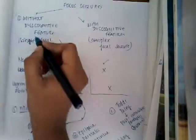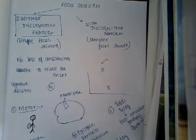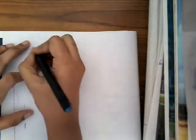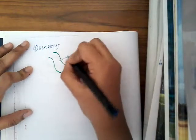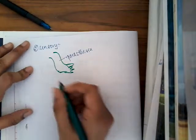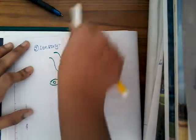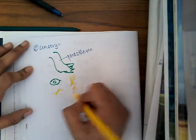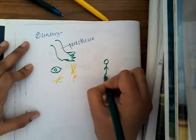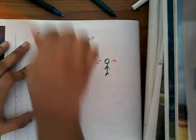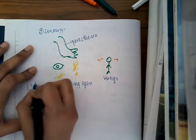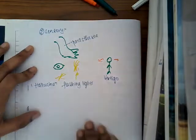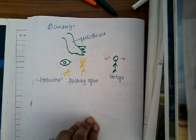This is the first type of focal seizure without discognitive features. The second type is the Sensory Type. In sensory type, there can be problems in the sensations of the body — paresthesias. Or there can be difficulty in vision where the person sees different types of lights or hallucinations. Or there can be a feeling of vertigo, loss of equilibrium. Flashing lights or hallucinations can be seen. These are the different types of sensory abnormalities seen in focal seizures without discognitive features.